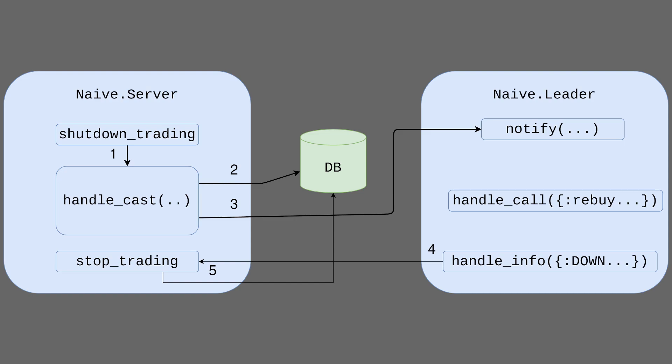The last functionality we added before the refactoring was the stop trading interface. It does the job, but sometimes we would like to shut down our trading a little bit more gracefully. Let's add a shutdown trading interface that will allow our strategy to continue running until all open positions get closed. We will add a handle cast callback that will flip the status of the symbol in the database and notify the leader of that symbol that settings have been changed. Based on that we will update the leader to not start any new traders when the symbol is in shutdown state. As the last trader finishes the trade cycle, the leader will call stop trading on the server, which will flip the status to off and kill the symbol supervisor, allowing us to reuse some of the stop trading logic.